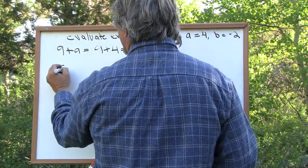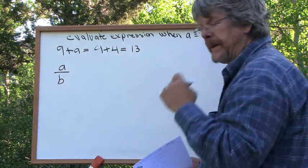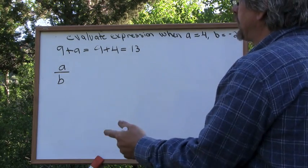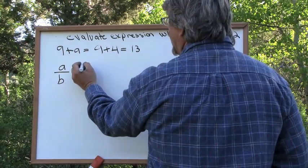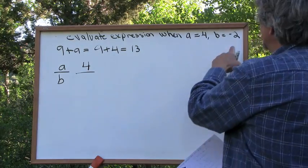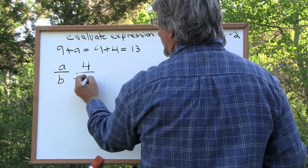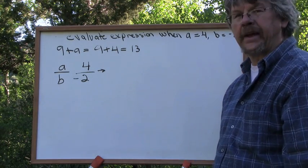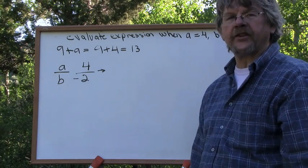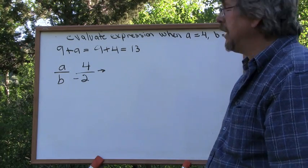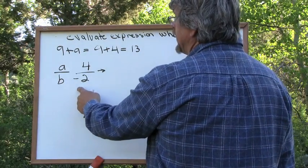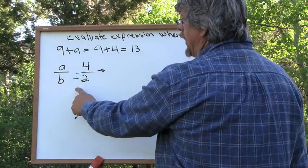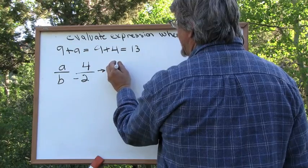What if we're given the expression A over B? Now we're given a fraction, but we know the values of the variables. A is 4, so we pop that 4 right there. B is negative 2, and now we solve the expression. What is 4 over negative 2? Remember, dividing by a negative — a positive divided by a negative gives a negative because this is an odd number of negatives. So this is simply negative 2.